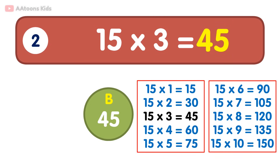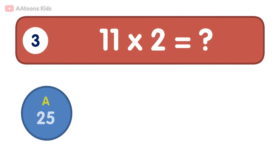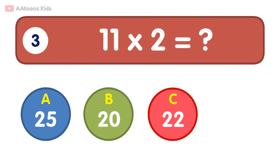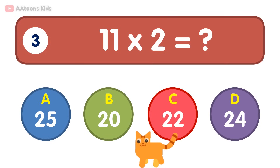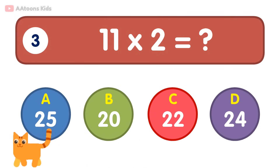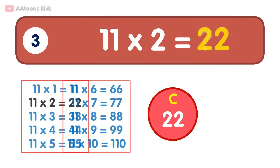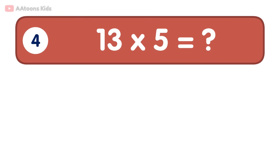45. 15 times 3 is 45. 11 times 2 is equal to 22. 11 times 2 is 22. 13 times 5 is equal to...